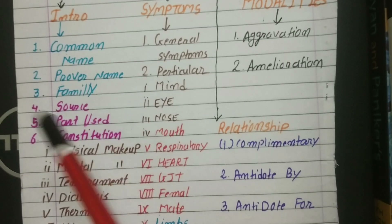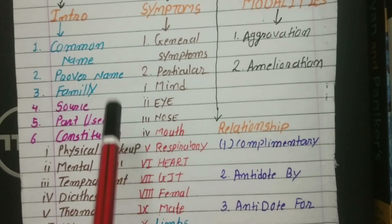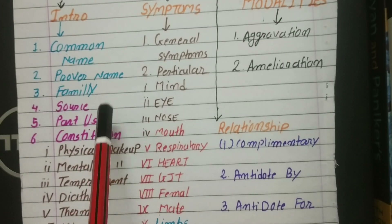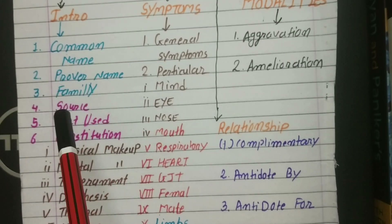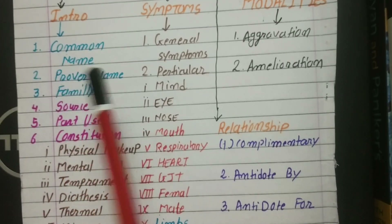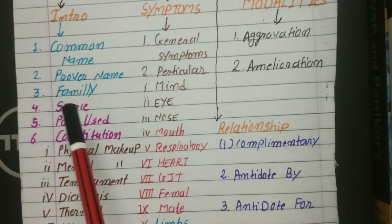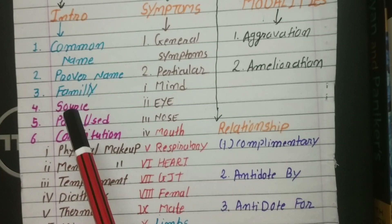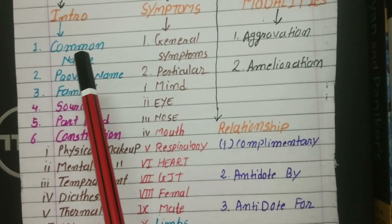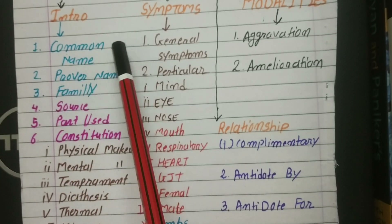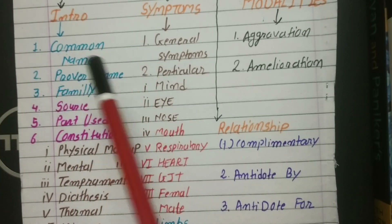In the introduction, the most important things are these three: common name, prover name, and family name. These three things are also asked separately in exams — what is the common name of this drug, who is the prover, and what is the family?